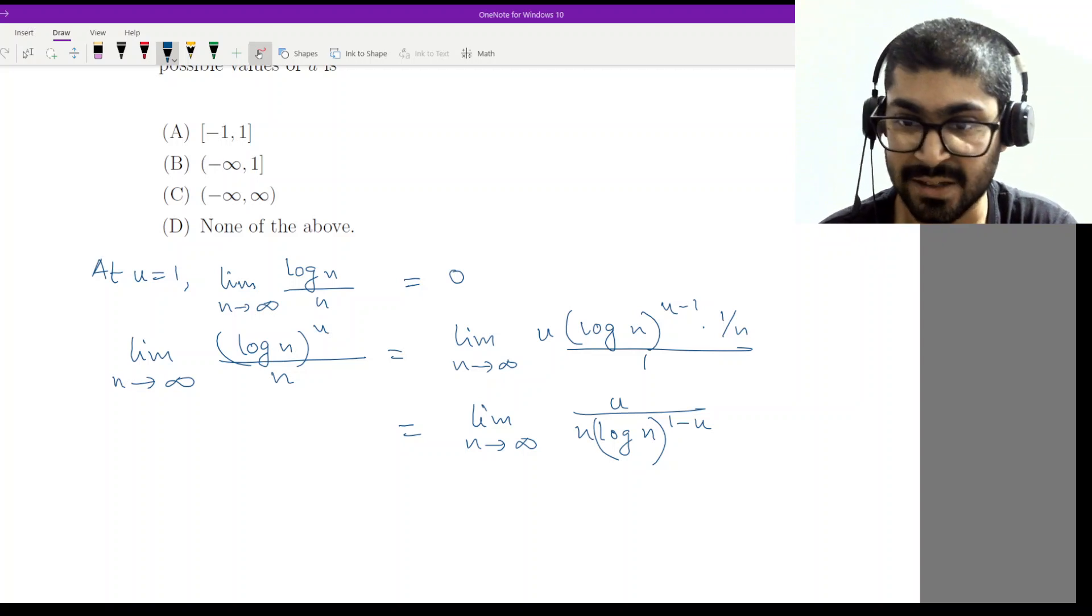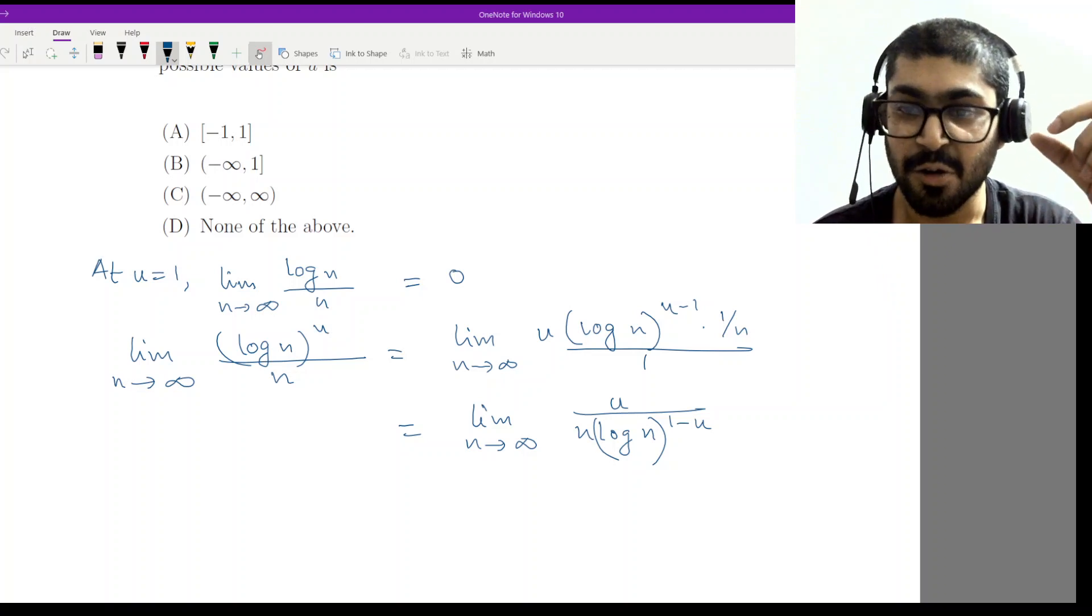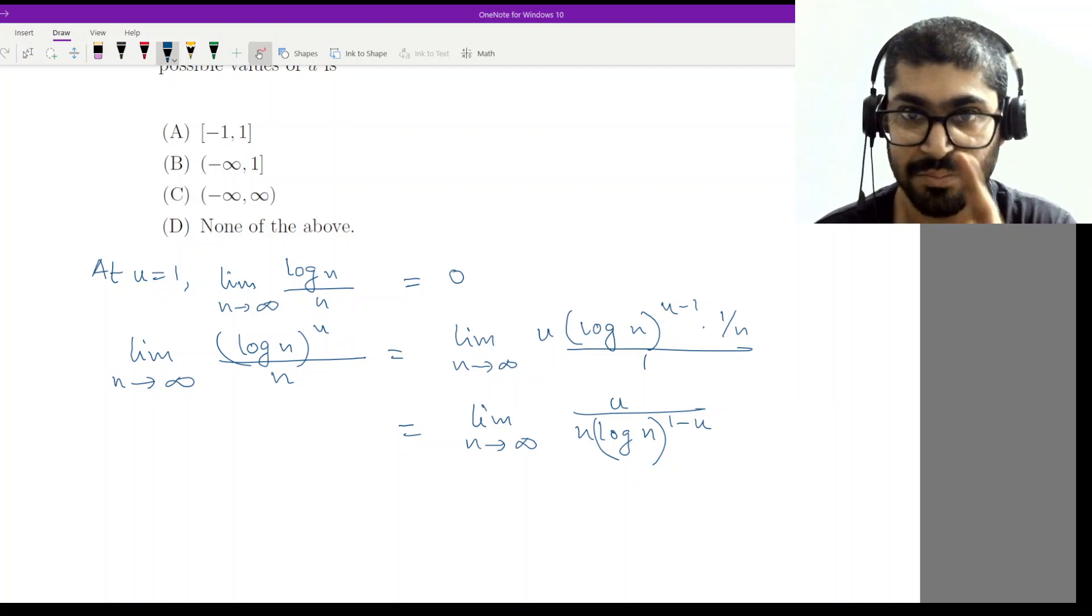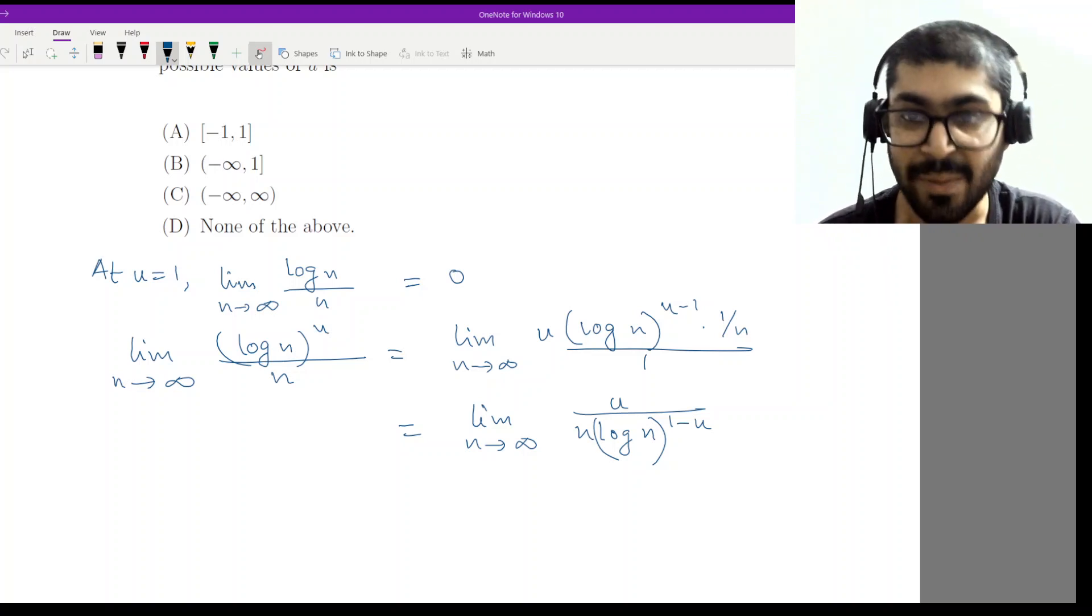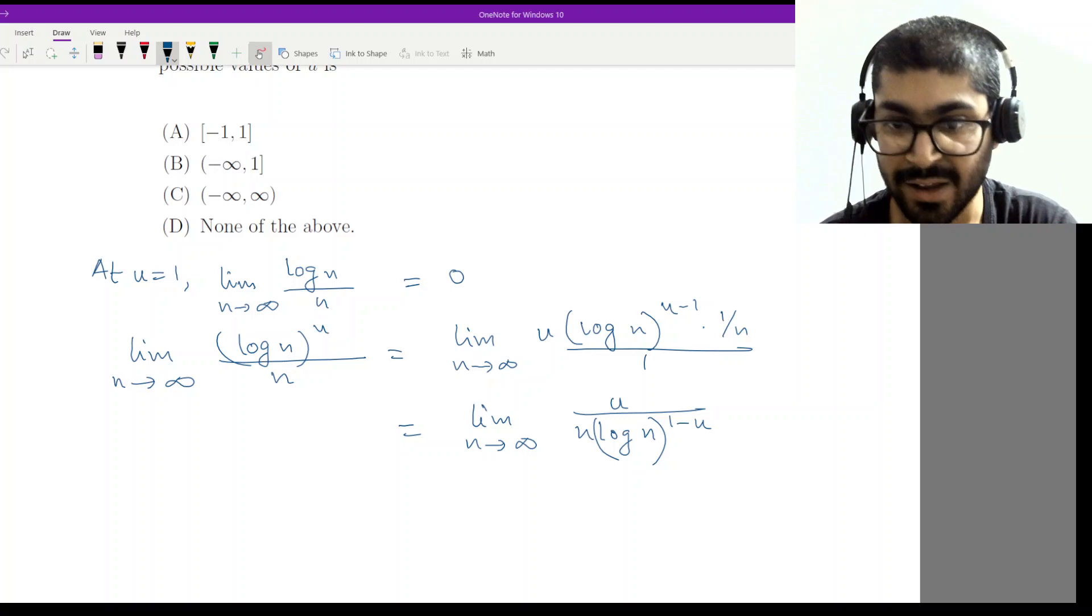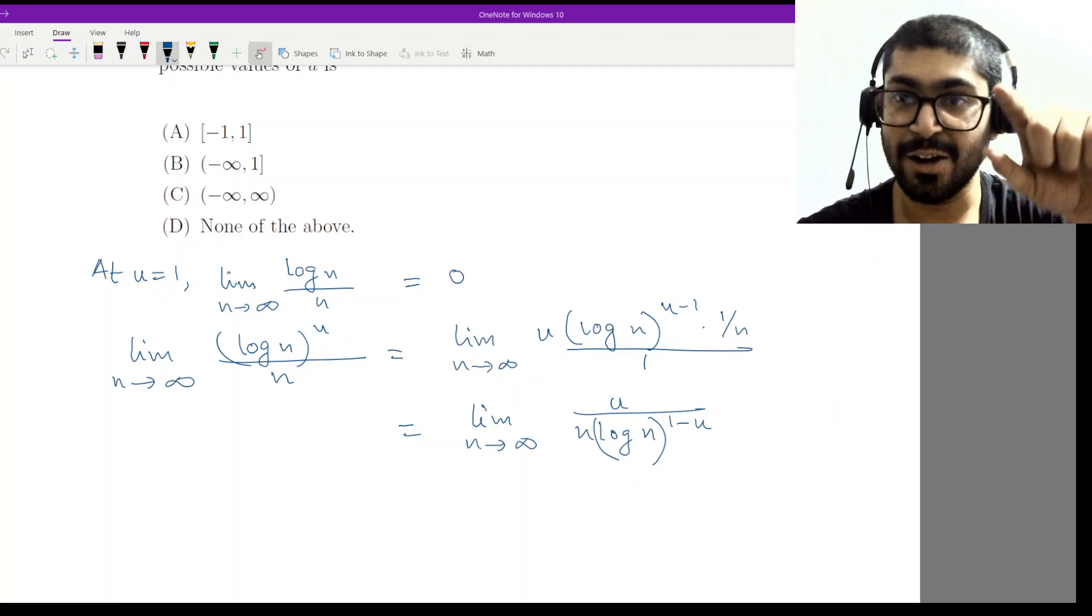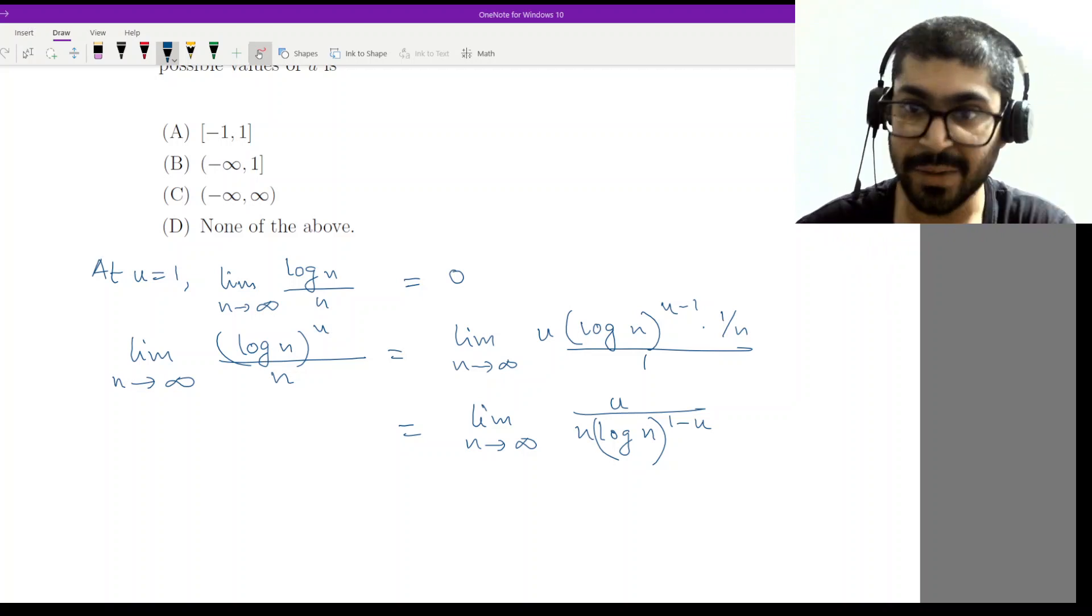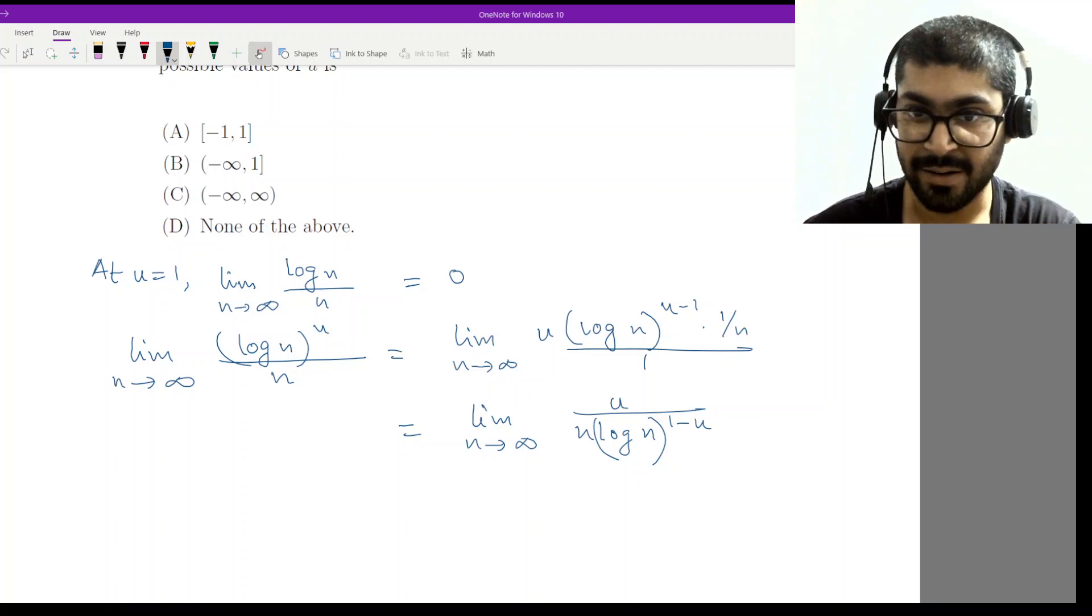So this will imply that 1 minus u greater than 0 because if u greater than equal to 1, then the denominator would grow much faster than the numerator and the limit would diverge. So as n is growing infinitely, the expression will converge. The expression that we got after applying L'Hospital's rule will converge only when 1 minus u is not greater than 0 or u less than 1. So that means u should be less than 1.